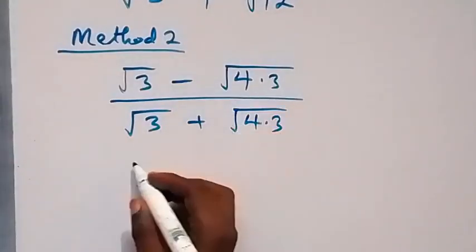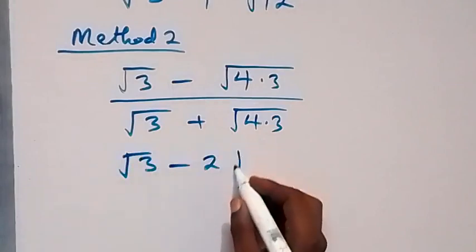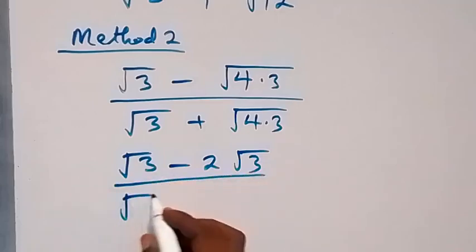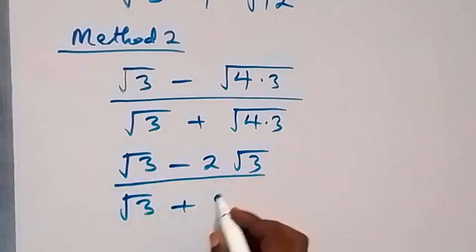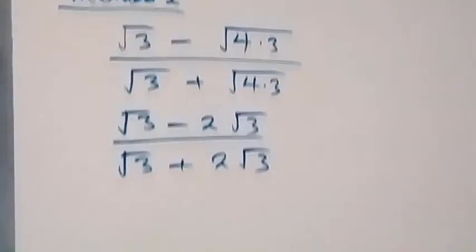Since we can get root 4, we separate it out, and that is 2. So this will be root 3 minus 2 root 3, divided by root 3 plus 2 root 3 as well.